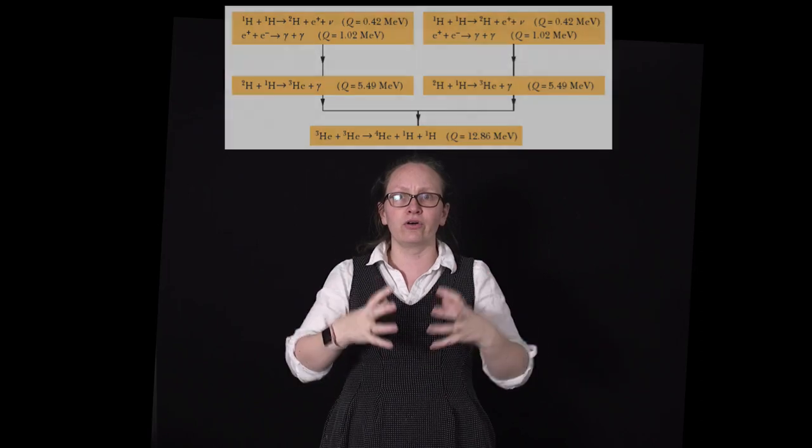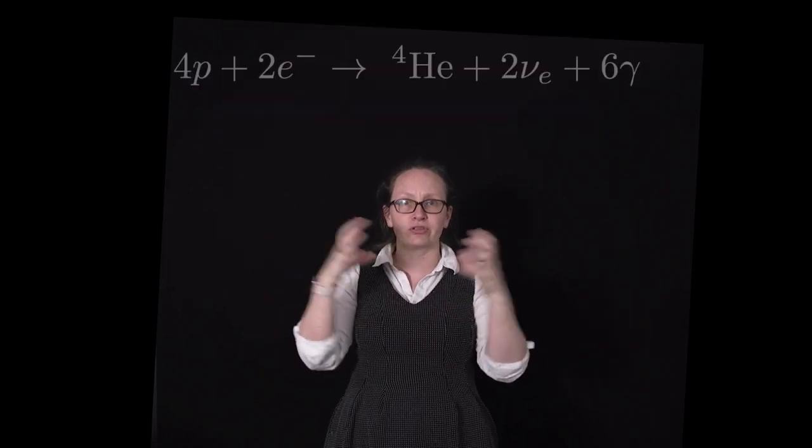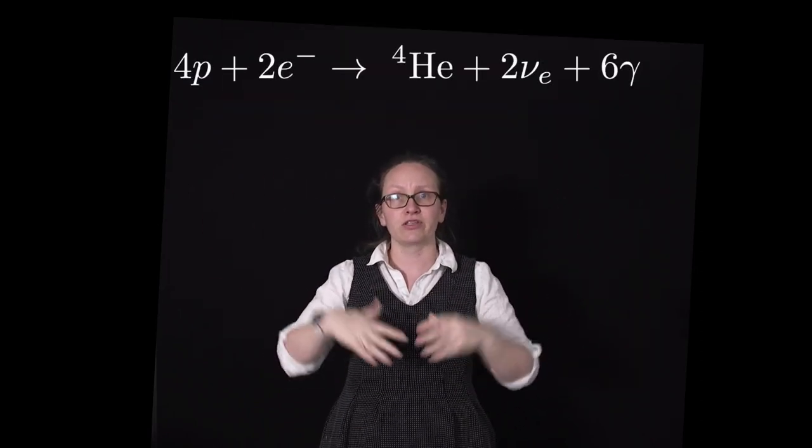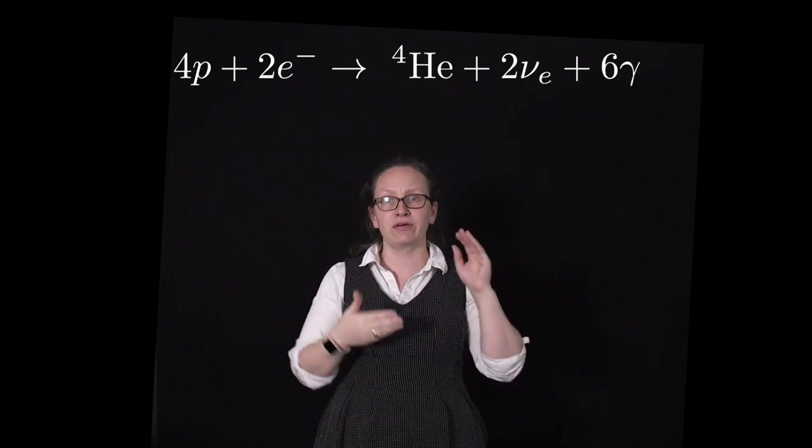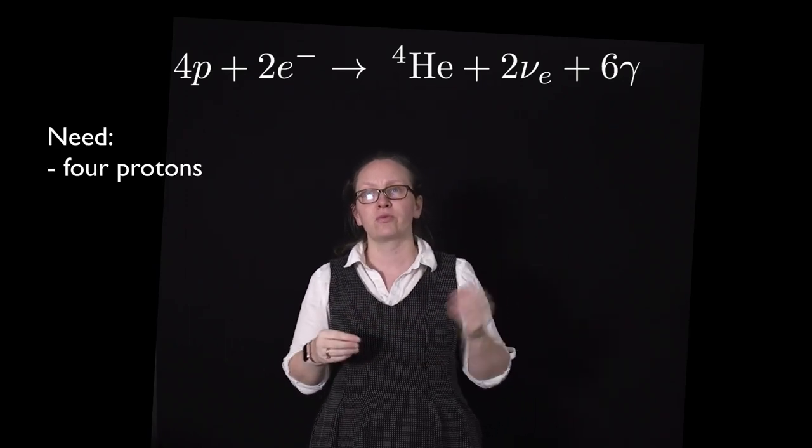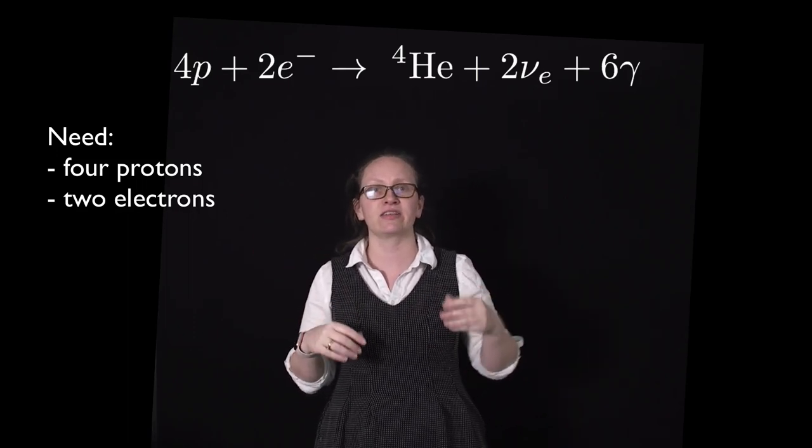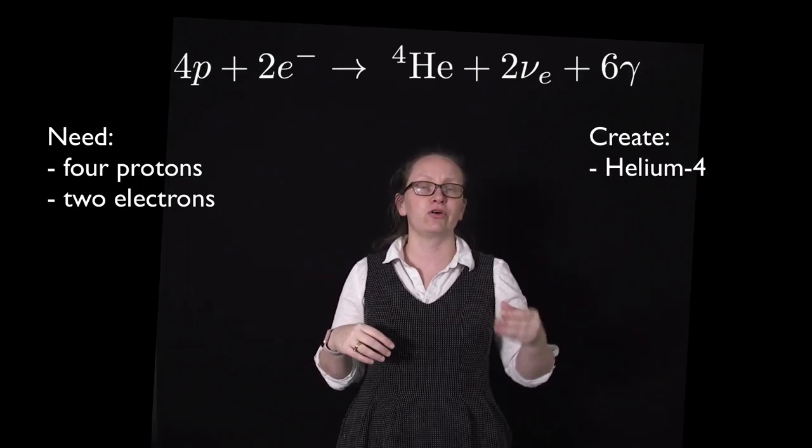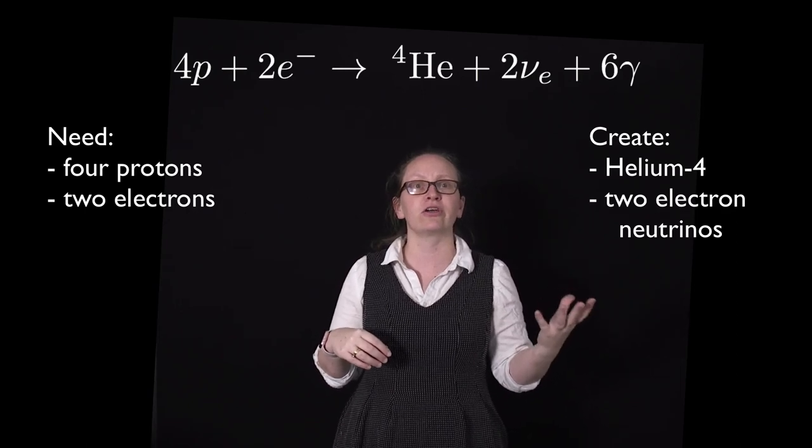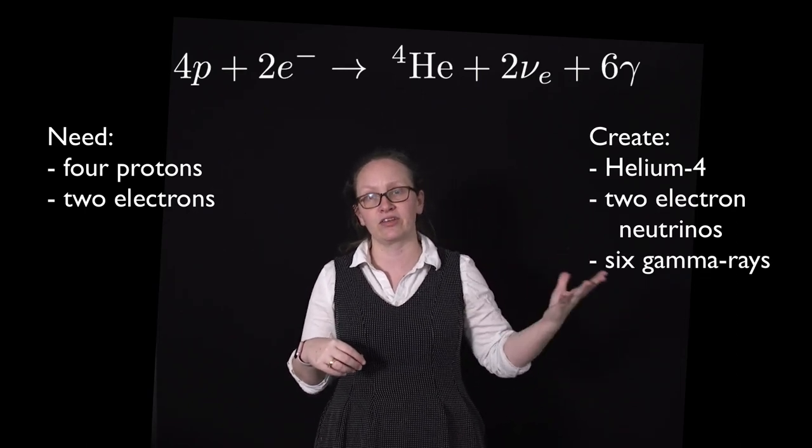We can combine it all into one equation to describe the entire cycle. So in the entire cycle we require four protons, we also require two electrons and these combine to give us helium-4 and then we also get two electron neutrinos and six gamma rays given off.